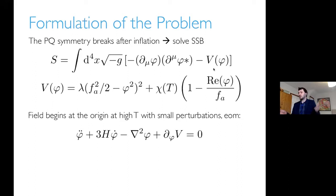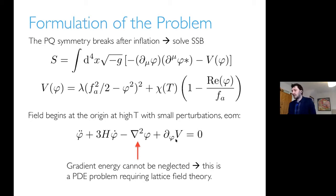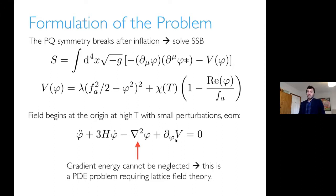The field begins at the origin when we have high temperature, with some small perturbations inherited from inflation, and it has the equation of motion given here. The gradient energy in this case can't be neglected — it's important. This is a PDE problem with large field fluctuations, so it needs to be solved with classical lattice field theory.